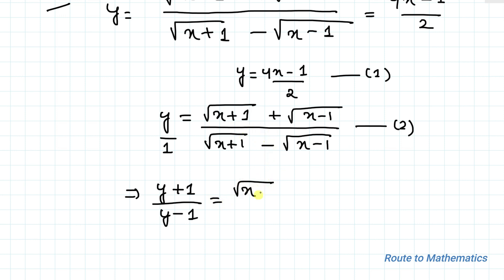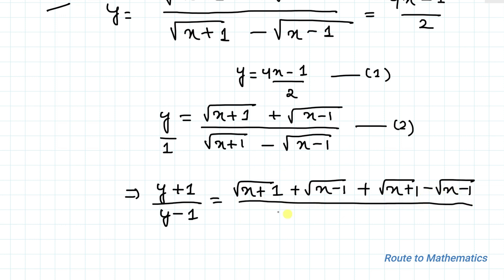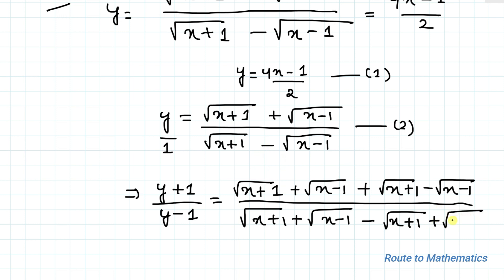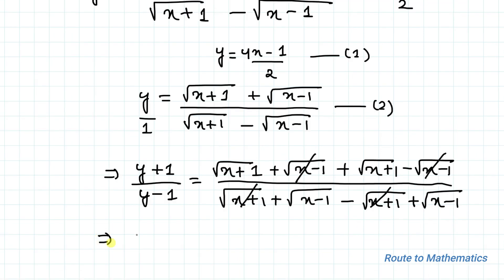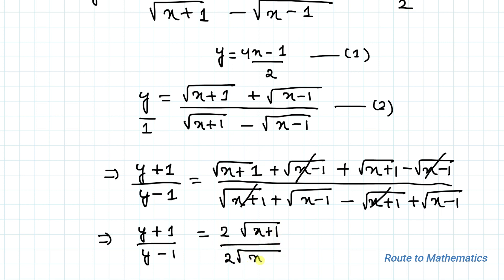Applying componendo and dividendo to equation 2: the numerator becomes (√(x+1) + √(x-1)) + (√(x+1) − √(x-1)) = 2√(x+1), and the denominator becomes (√(x+1) + √(x-1)) − (√(x+1) − √(x-1)) = 2√(x-1). The terms cancel appropriately, so we have (y + 1) / (y − 1) = 2√(x+1) / 2√(x-1).